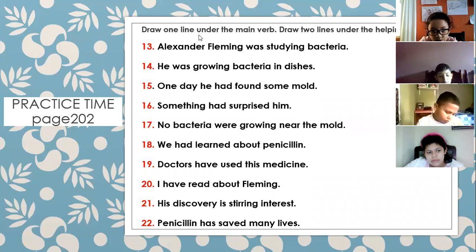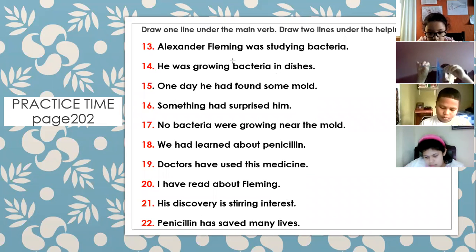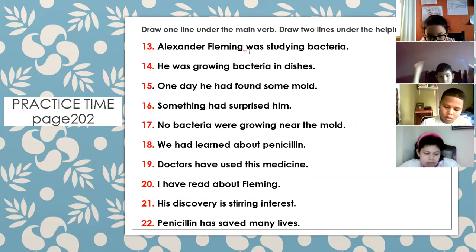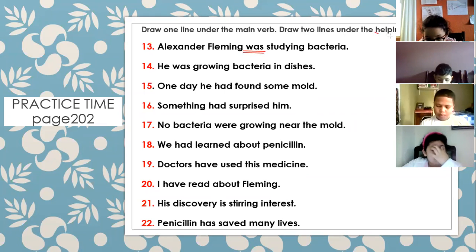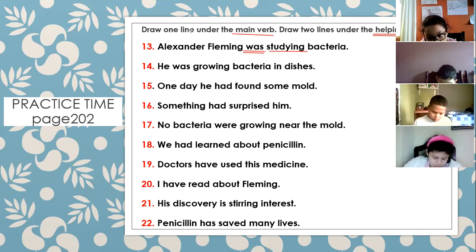Draw one line under the main verb, draw two lines under the helping verb. First sentence — Alexander, what is the answer? The helping verb is 'is,' the main verb is 'studying.' So two lines under 'is' — the helping verb — and one line under 'studying' — the main verb. Sebastian, the next one is for you.